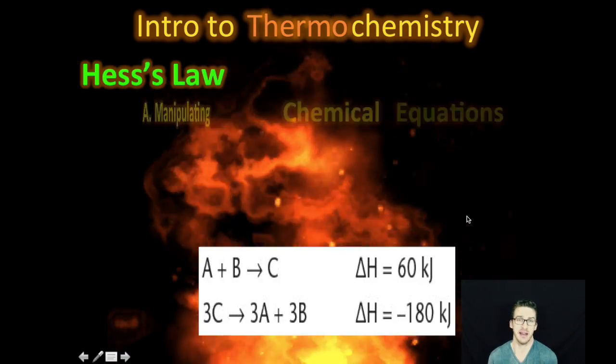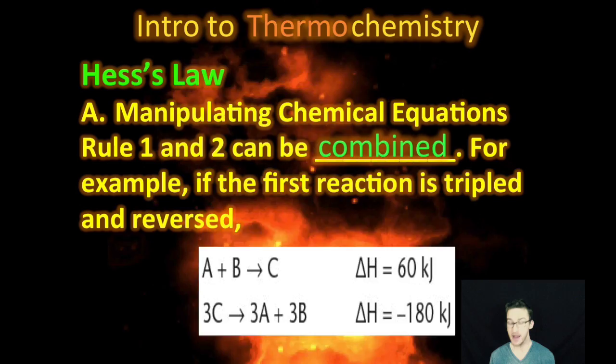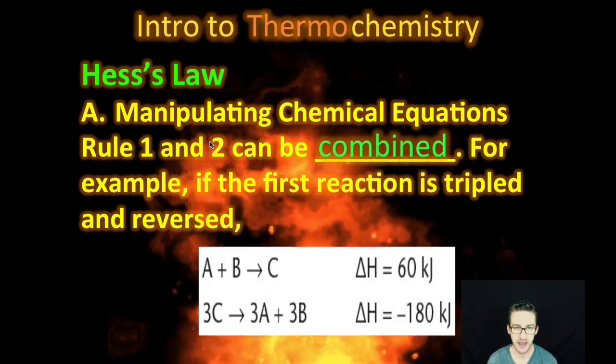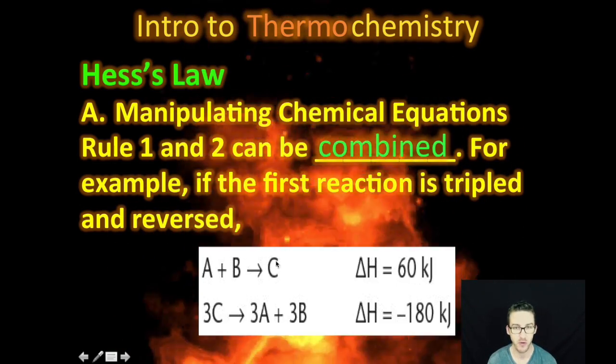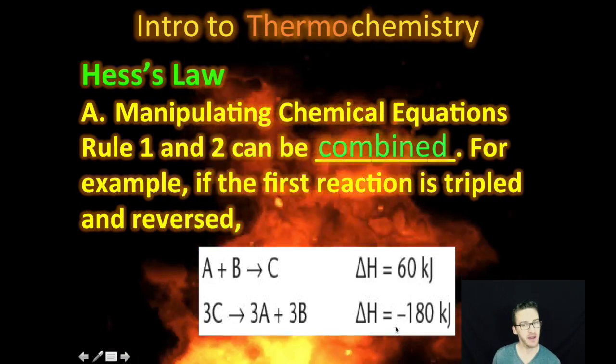And then lastly, recognize that you can combine rules one and two. For example, if you take that first reaction and you triple it and then reverse it, you will triple your enthalpy change, but it will have the opposite sign.